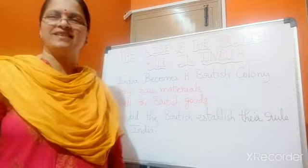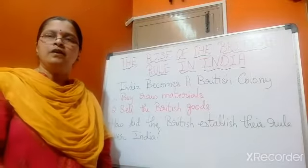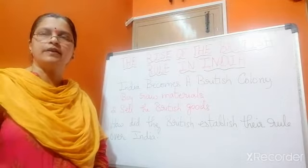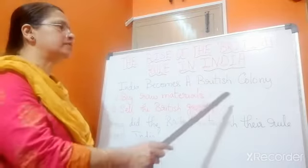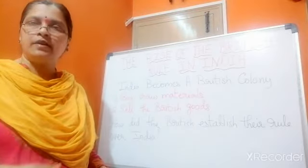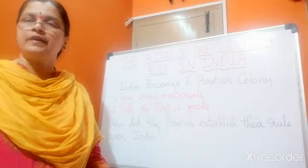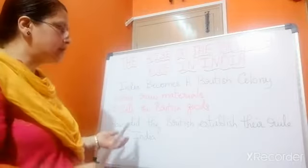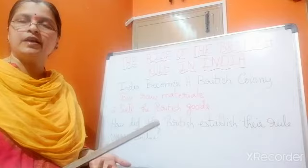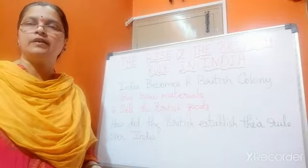Hello, good morning children. We have learnt that the British defeated the French and established their colonies in India. Now India becomes a British colony. The British buy the raw materials and take them to their countries, manufacture goods, and sell the British goods in India to earn more profit. This is how India became a British colony.